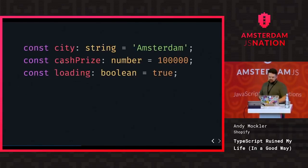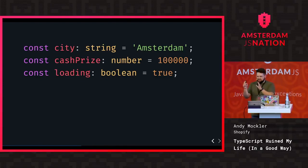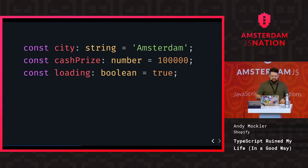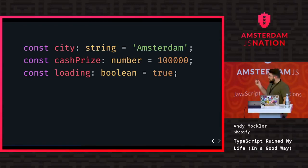Here's the hello world of types. I have three simple identifiers: city, which is a constant with the type annotation string assigned to Amsterdam; a cash prize number variable; and a loading boolean. Anytime you see a colon followed by a type name, that's a type annotation. And now I have types in my JavaScript — it's pretty simple.